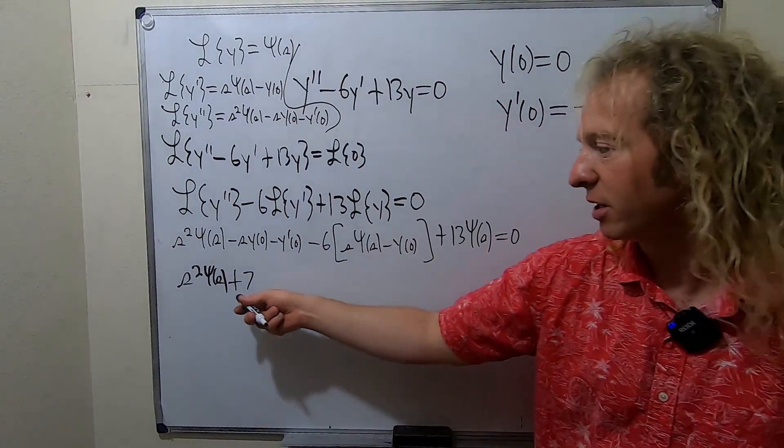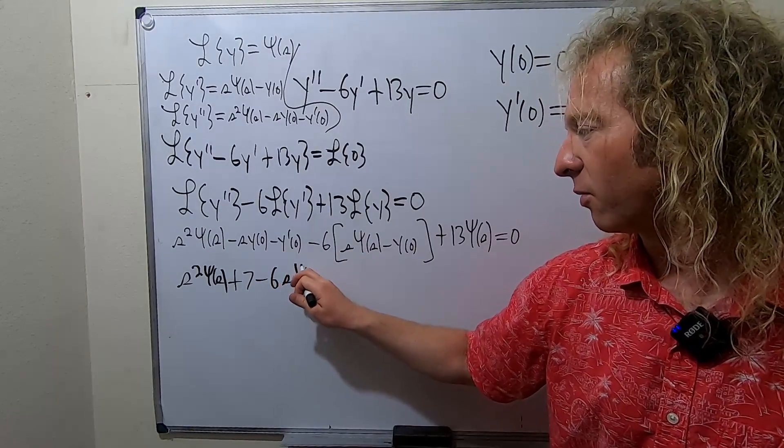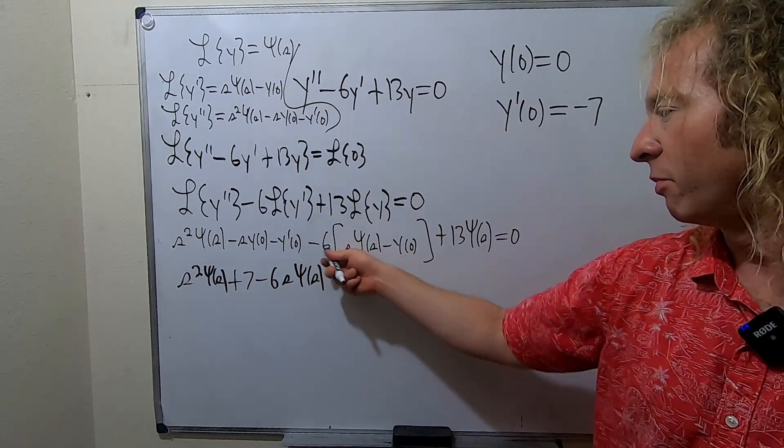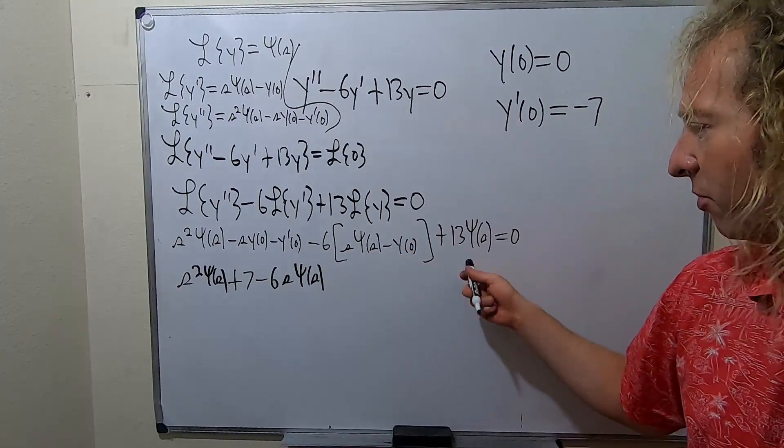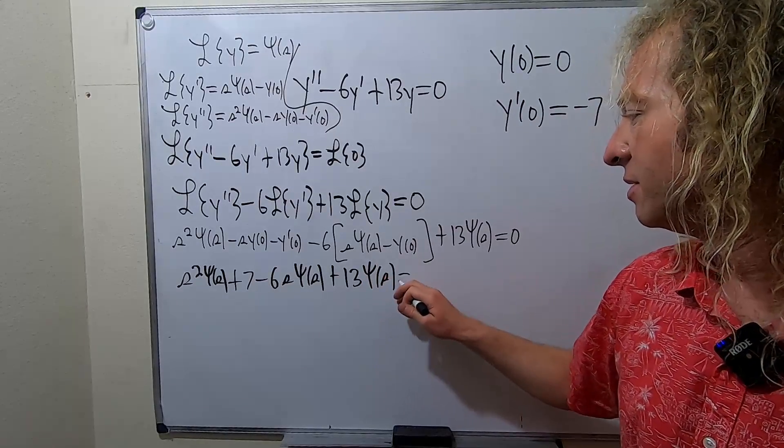So this was 0. This was negative 7. So it became a plus 7. Minus 6s pitchfork y of s. This is gone. So that's good. So when we multiply, it goes away because this is 0. And then plus 13 pitchfork y of s. And this is equal to 0.